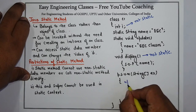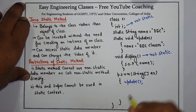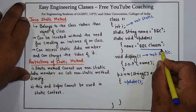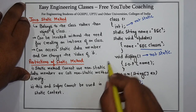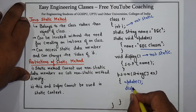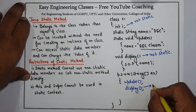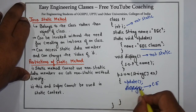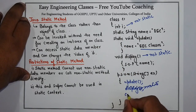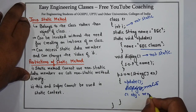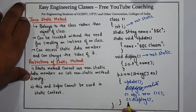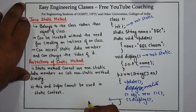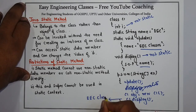Inside the main method, which is also static, I can directly call a static method. So I can directly write update here — it will update the value of name to EEC Classes. And if I want to call display, since it does not have the static keyword, I cannot call it directly — it will give me a compile-time error. For this I have to create an object of this class: C1 object equals to new C1, and then call object.display. Once I write this, the output will be: name is EEC Classes, so the output will be EEC Classes.